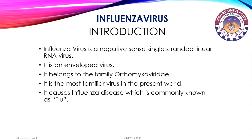What is influenza virus? Influenza is a viral infection that affects mainly the nose, throat, bronchi, and occasionally the lungs. Influenza virus is a negative-sense, single-stranded, linear RNA virus.